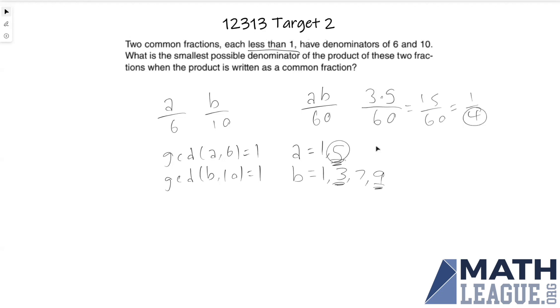Or if we decide to use nine, well let's see, nine times five over sixty gives forty-five over sixty which equals three over four. So in either case this denominator is going to equal four and this is our answer.